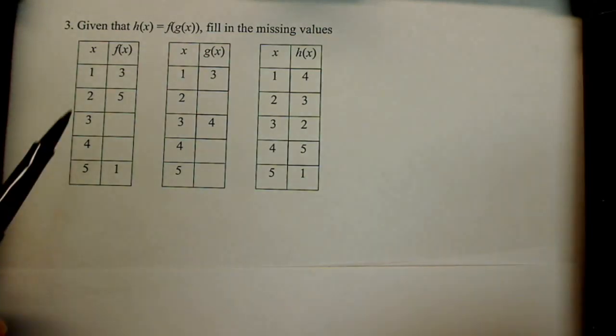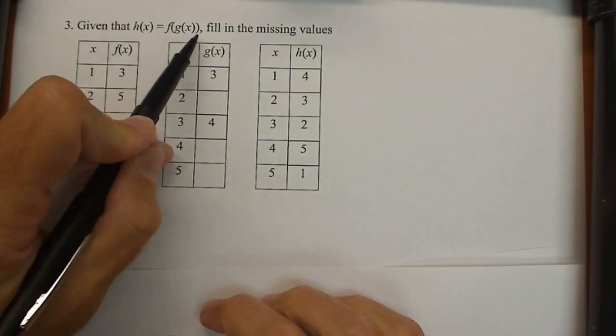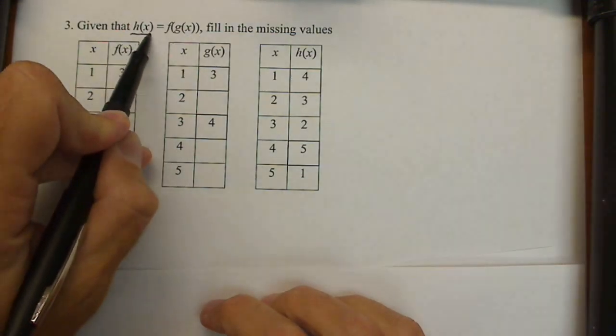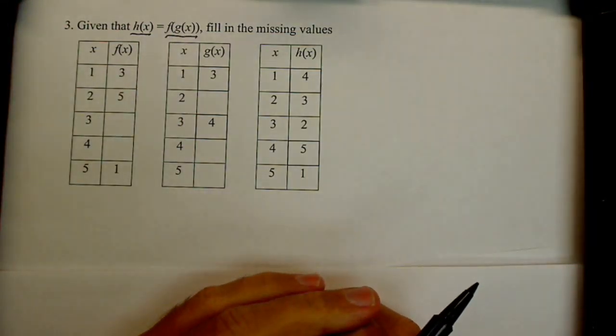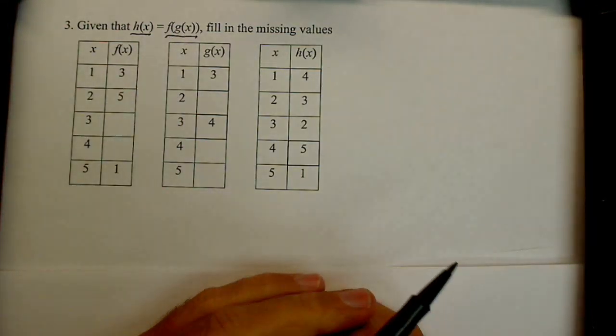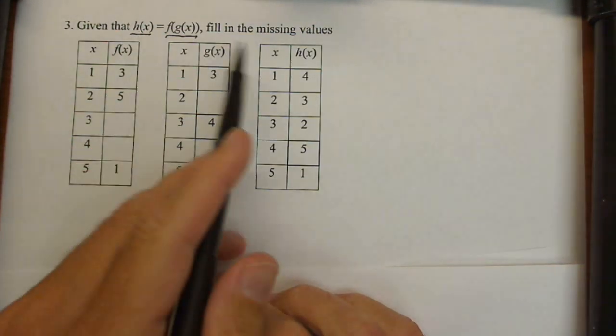In this video we're going to fill in some missing values in tables based on the fact that we have a composition, specifically h(x) equals f(g(x)). In this case we're actually going to work backwards to get some of these values.